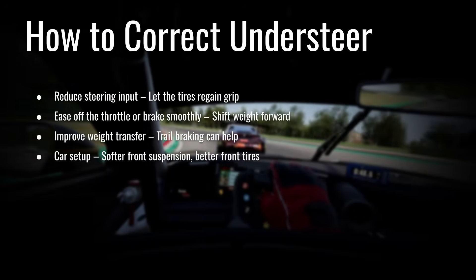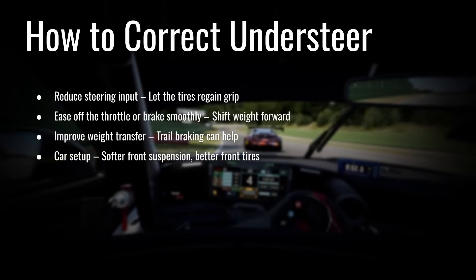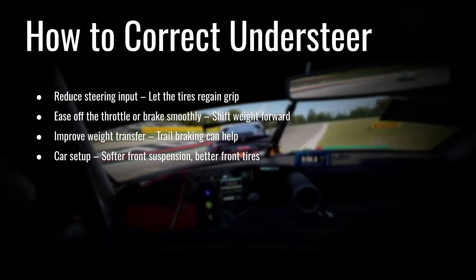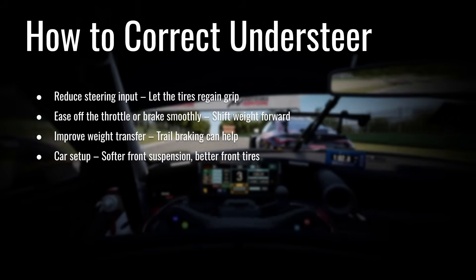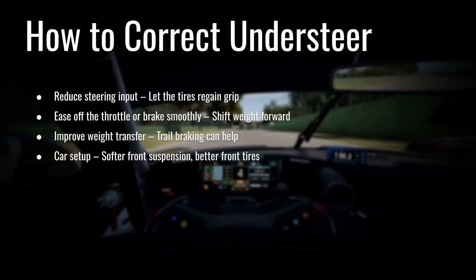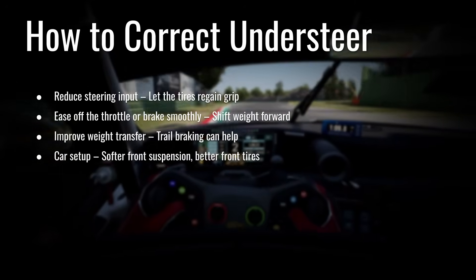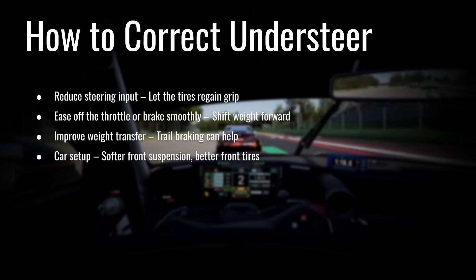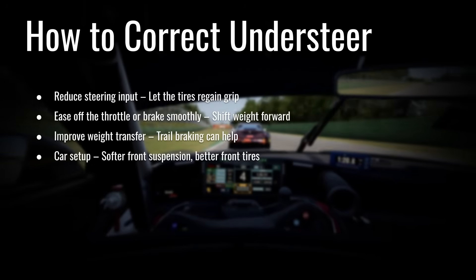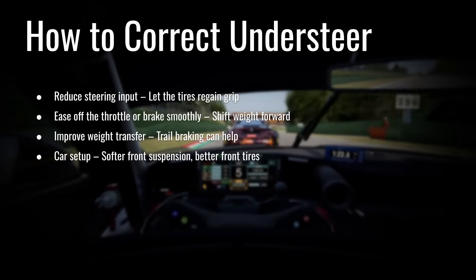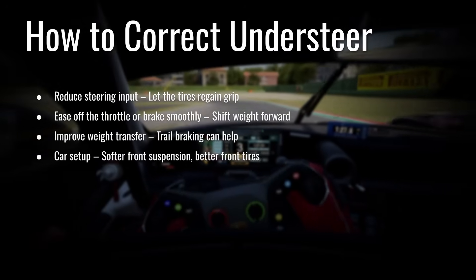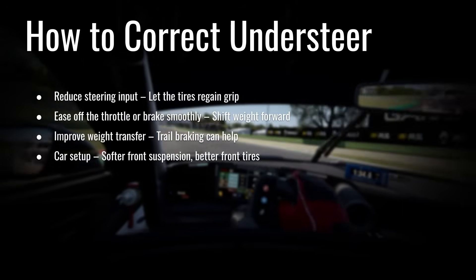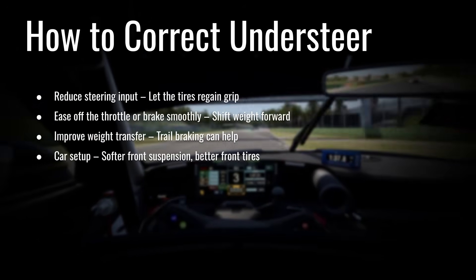To correct understeer, the main thing you want to do is reduce your steering input. If you're at 90 degrees of wheel lock, you want to bring it back toward 45 degrees — basically back toward straight — to let the tires regain grip, find where you have grip, and then try adding a little more turn to get more out of it. The first thing you want to do is not instinctively turn more; it's actually the opposite. Unload the steering wheel to get back to a point where those tires have grip.